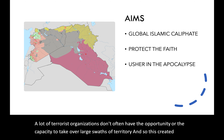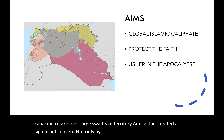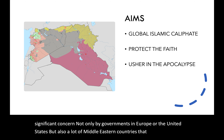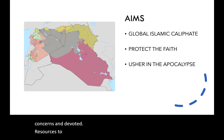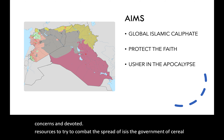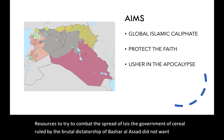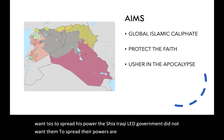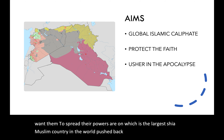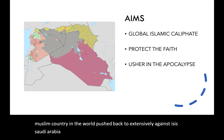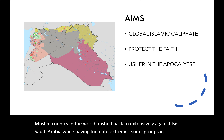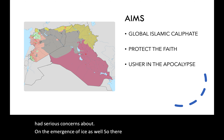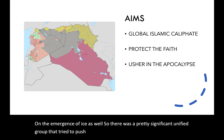This created significant concern not only from governments in Europe and the United States, but also from many Middle Eastern countries that devoted resources to combat the spread of ISIS. The government of Syria under Bashar al-Assad did not want ISIS to spread its power. The Shia Iraqi-led government opposed them. Iran, the largest Shia Muslim country in the world, pushed back extensively against ISIS. Saudi Arabia, while having funded extremist Sunni groups in the past, also had serious concerns about ISIS's emergence. A fairly unified coalition tried to push back against ISIS's growing territorial control.